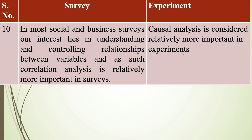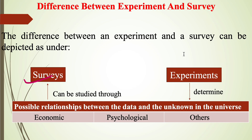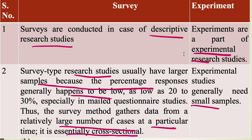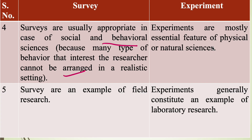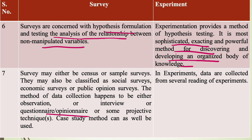To summarize: surveys are related to descriptive research studies, experiments to experimental research studies. Surveys require large sample sizes; experiments require small sample sizes. Surveys are conducted with describing, recording, and analyzing data, whereas experiments use a systematic and logical method for answering research questions through experimentation in the lab. Surveys are usually related to social and behavioral sciences; experiments are related to physical and natural sciences. Surveys are examples of field research; experiments are examples of laboratory research. Surveys are concerned with hypothesis formulation and testing, whereas experiments provide an exact and powerful method for building an organized body of knowledge.